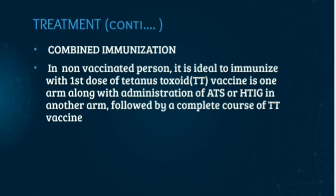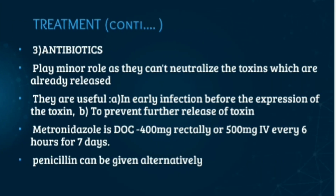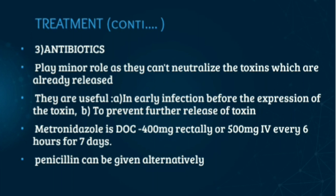Combined immunization — both active and passive — is the next treatment method. In non-vaccinated persons, it is ideal to immunize with the first dose of tetanus toxoid (TT vaccine) in one arm along with administration of ATS or HTIG in the other arm, followed by a complete course of TT vaccine as per schedule. Antibiotics play a very minor role as they cannot neutralize already released toxins; however, they are useful in early infection before toxin expression and to prevent further release of toxin. The drug of choice is metronidazole, given 400 mg rectally or 500 mg IV every 6 hours for 7 days. Penicillin can be given alternatively.